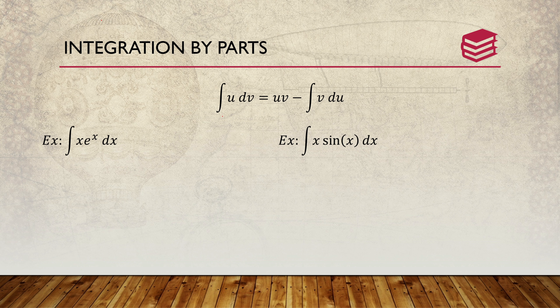Now we're going to look at integration by parts. The formula is: the integral of u dv equals u times v minus the integral of v du. The main things you need to know are what your u is and what the other parts of the equation are — specifically your u and your dv.